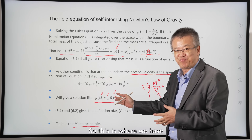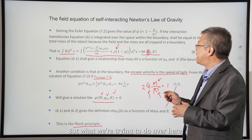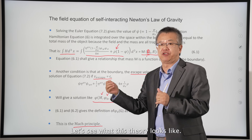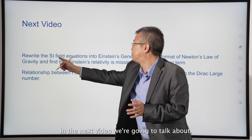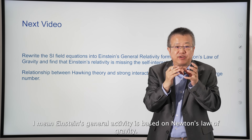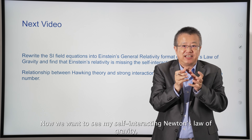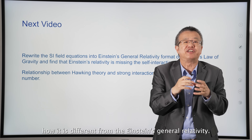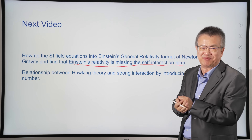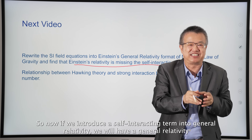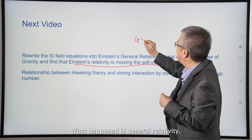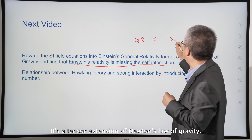We include c squared to make it dimensionless. This is what we hope to derive, similar to the Schwarzschild result. What we're doing with the self-interacting field theory is: in the next step, let's write the self-interacting field equation in a form similar to Einstein's general relativity. Einstein's general relativity is a tensor extension of Newton's law of gravity. Now we want to see how my self-interacting Newton's law of gravity differs from Einstein's general relativity.